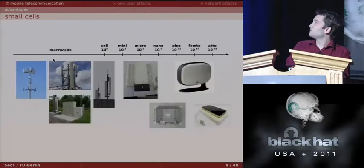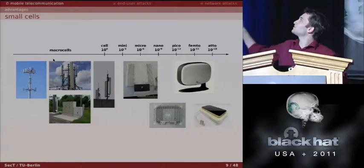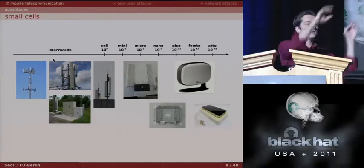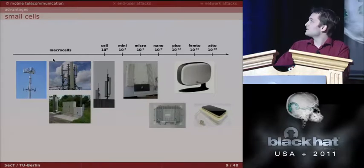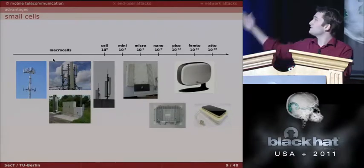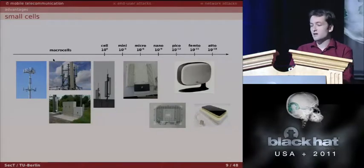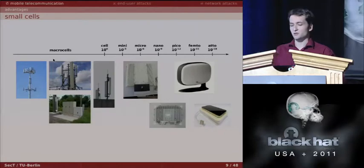We can see a range of cell sizes — macro cells with up to 30 km coverage, down to femtocells. There are even smaller devices: the R2 cells presented at the Mobile World Congress connect via USB over your laptop and provide only 2–5 meters of coverage.